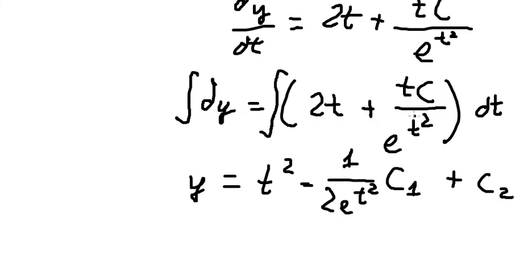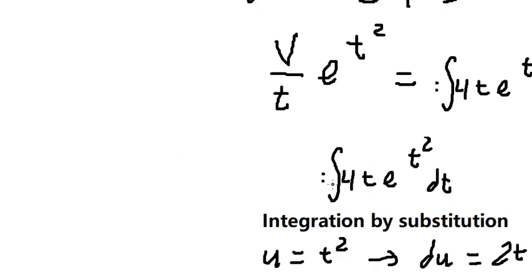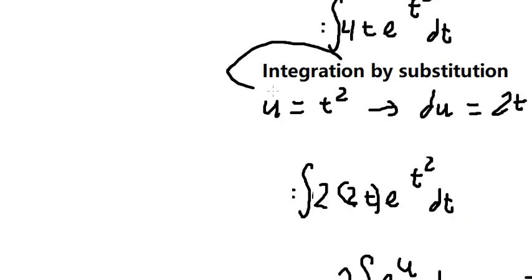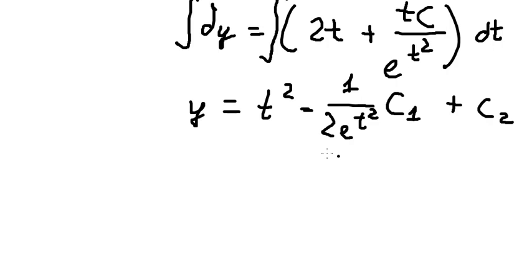To do this integration, we can use integration by substitution again. We put u equal to t squared, then divide both sides by 2 — you use the same technique as before. Now we have C1 and C2. We have two constants, and we have the initial conditions.